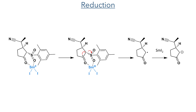As the sulfone had now served its purpose it could then be removed by reduction with samarium diiodide. This is a radical reducing agent which is chelated by the carbonyl and sulfone oxygens, which first forms a radical at the carbonyl centre, which then moves to the alpha position, driving the elimination of the sulfone group. Another one-electron reduction is carried out by another equivalent of samarium diiodide to generate an enolate intermediate.